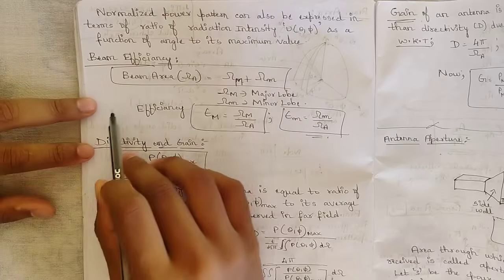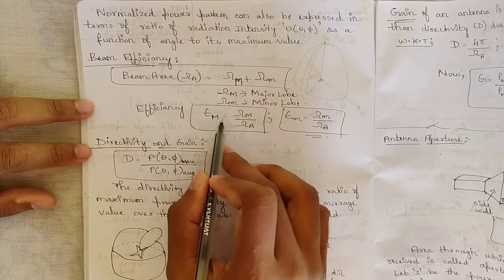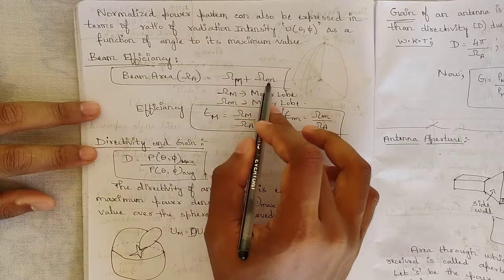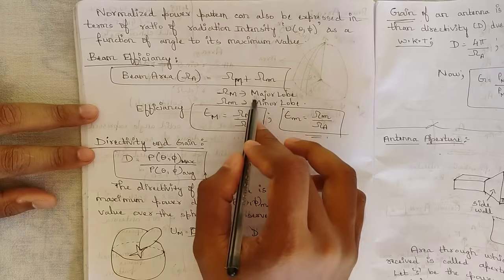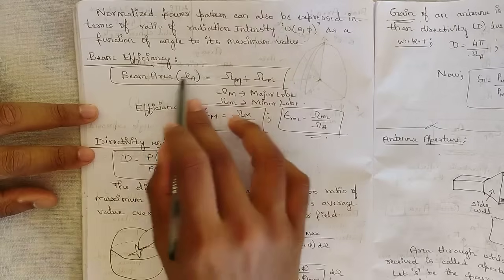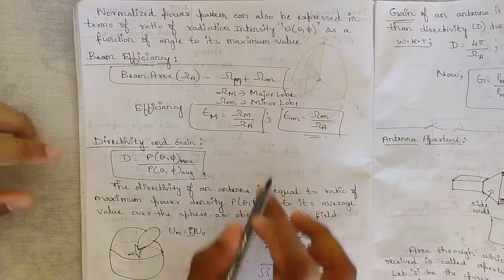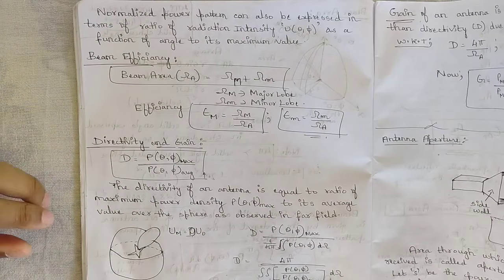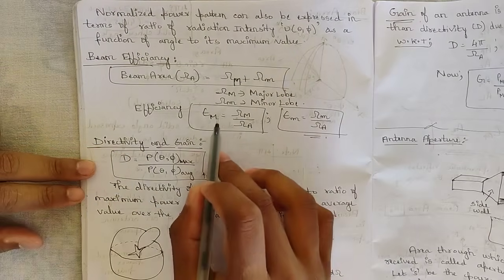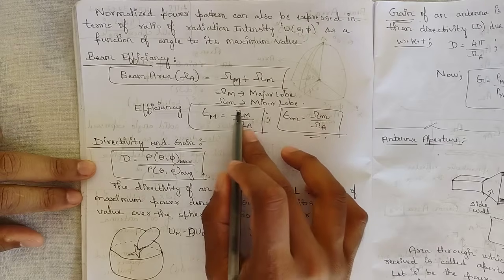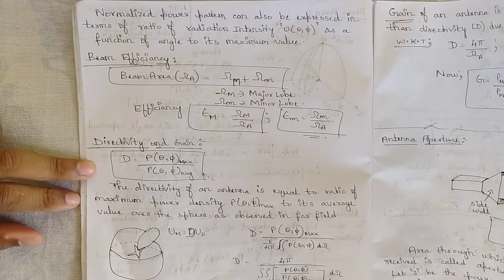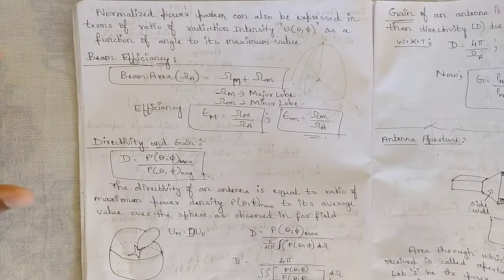Beam efficiency is calculated as epsilon_m. The beam area equals omega_M (major lobe area) plus omega_m (minor lobe area). This is the beam area equation expressed in terms of major and minor lobes in the power pattern. Beam efficiency is defined as the major lobe beam area omega_M divided by the total beam area omega_A. This ratio is the definition of beam efficiency.